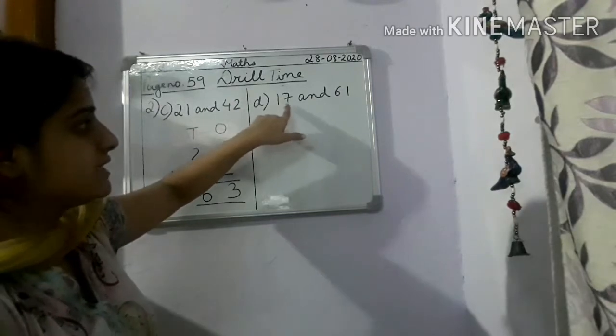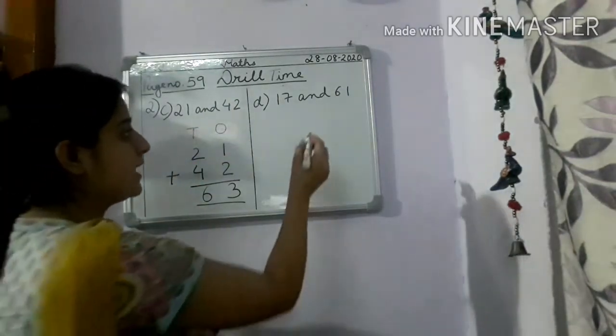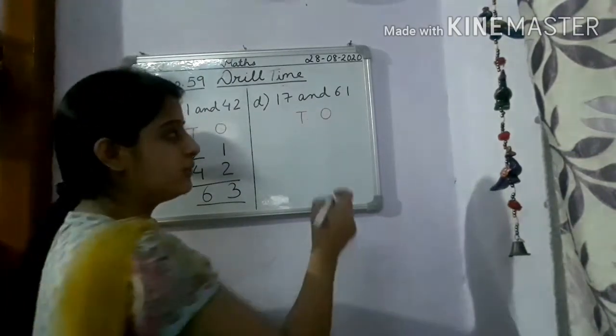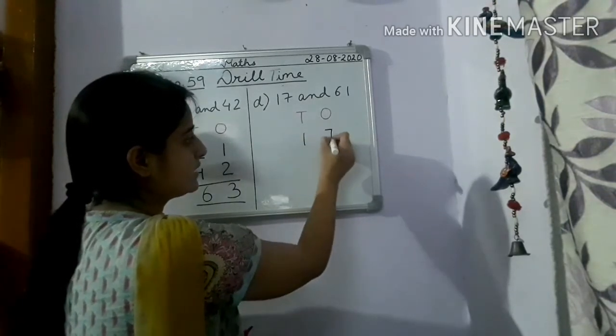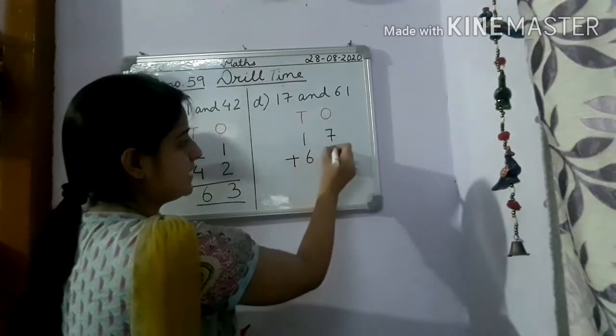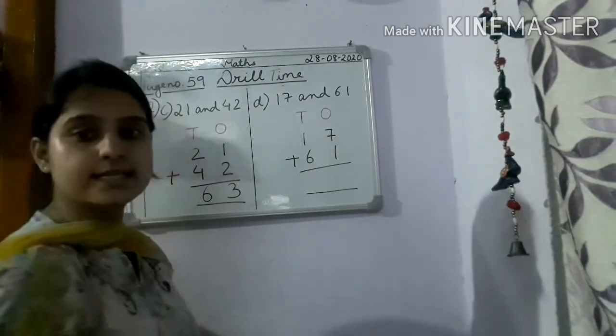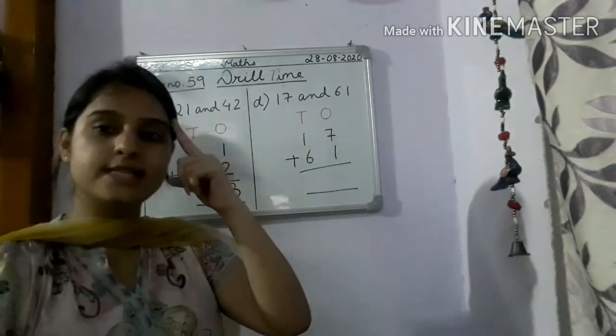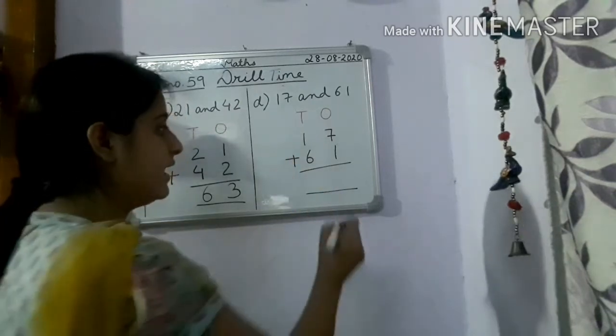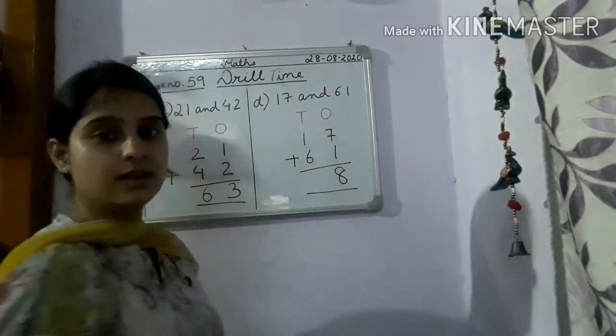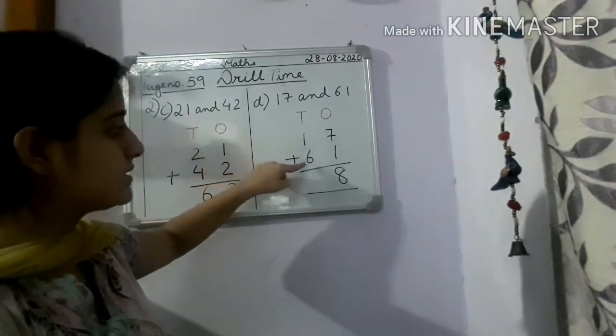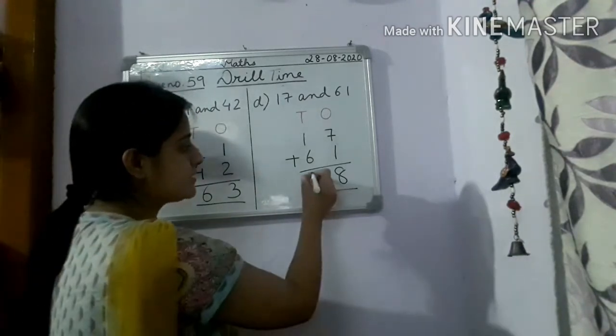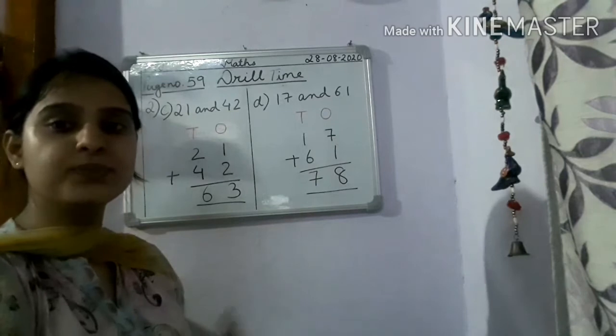D, add 17 and 61. So again we will put two places, one's, tens. Now we will arrange the numbers, 17 plus 61. So let's count from one's place children, 7 plus 1. So 7 in mind plus 1, 8. Then tens place children, 1 plus 6 is what? 6 in mind plus 1, the next number you will get that is 7. So what is the sum? 78. So children, do it in your copy.